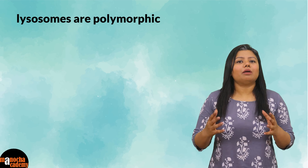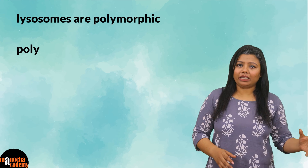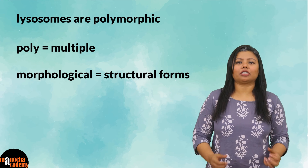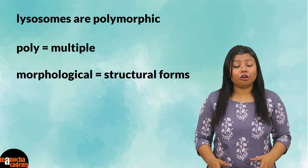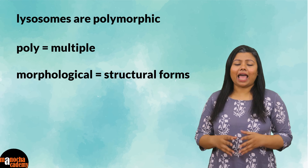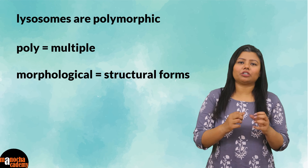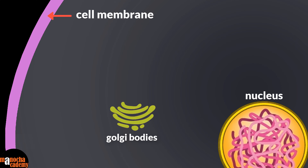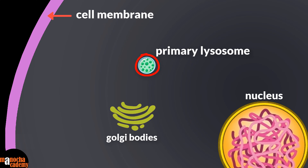Lysosomes are polymorphic, meaning they have multiple morphological structural forms. Depending on what they are digesting and which other structure they have united with, there can be four types. The first type is the fresh lysosome just formed from the Golgi bodies — known as the primary lysosome — a single membrane-bound sac containing acid hydrolases.